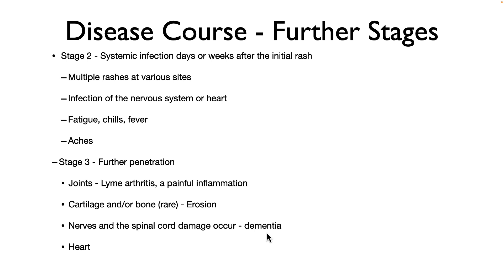In stage two, the infection can affect the nervous system or the heart, and you'll have fatigue, chills, fever, and body aches. Stage three involves further penetration and can occur quite a few months or years past the initial infection. You'll get infections in the joints and Lyme arthritis — a painful inflammation of the joints that was first mistaken as rheumatoid arthritis. There can be erosion of cartilage or bone, nerve and spinal cord damage, dementia in some people, and serious infections of the heart.